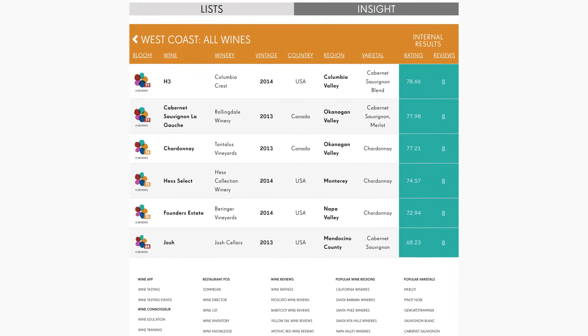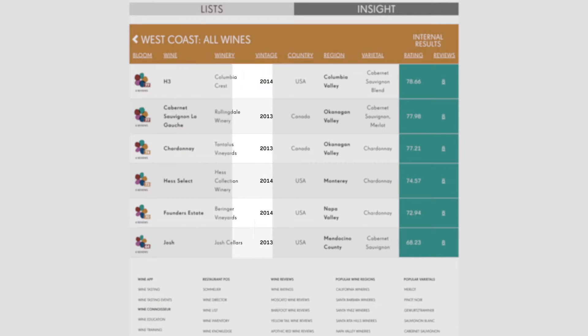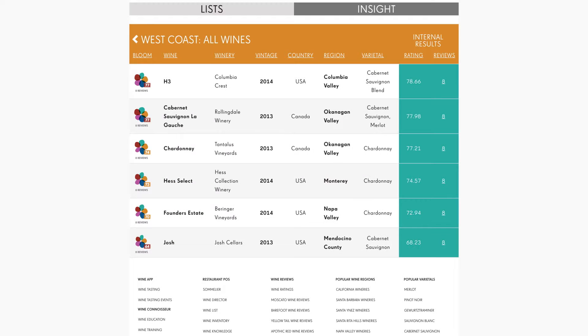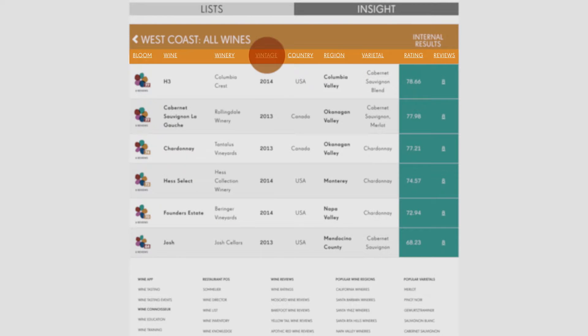The consumer rating of the wines is on the left side. Your in-house ratings are in the green area. You can sort the results like this.